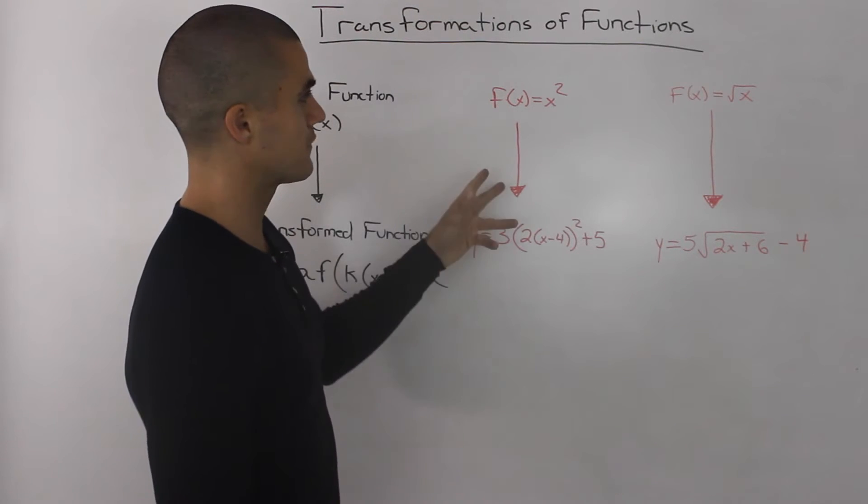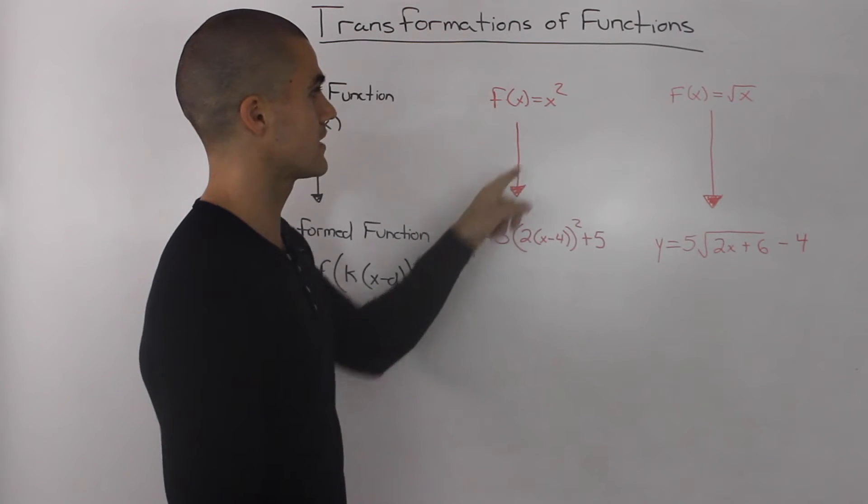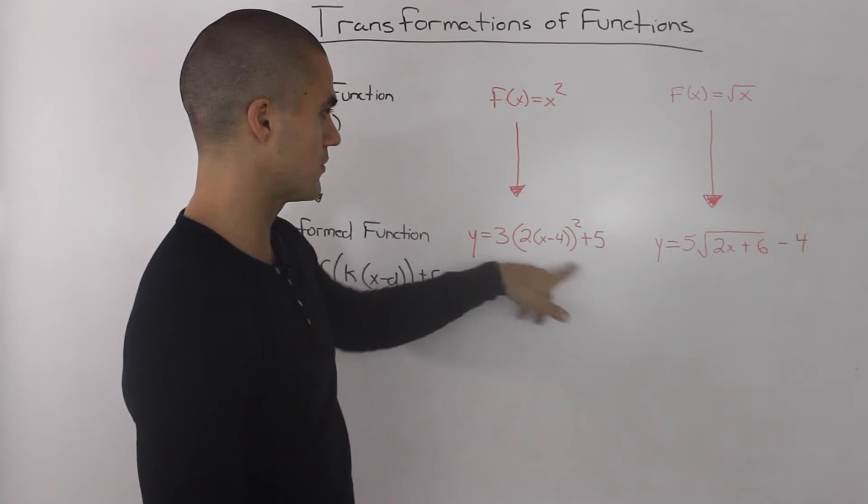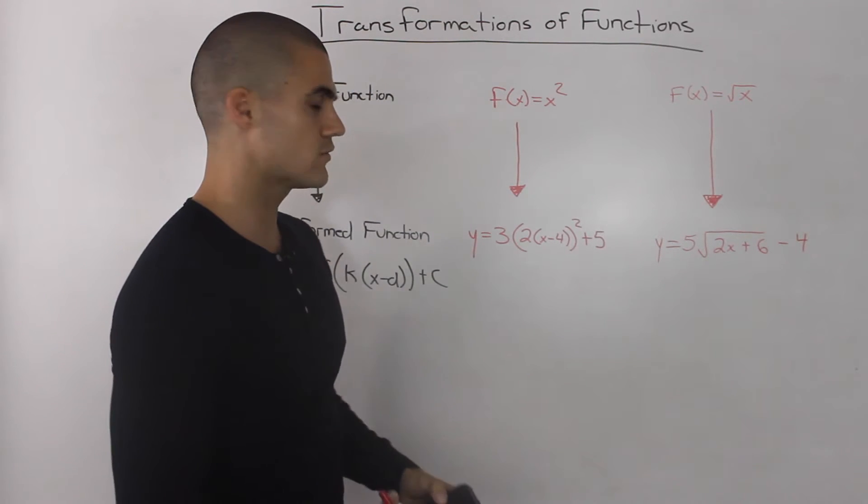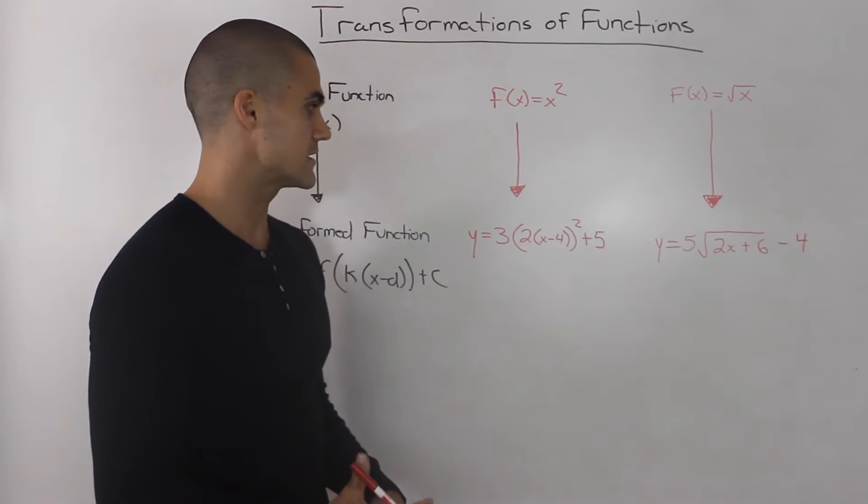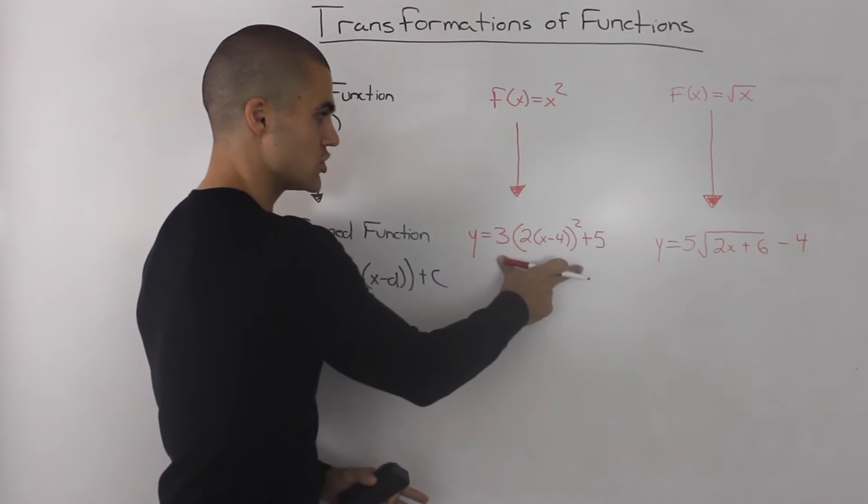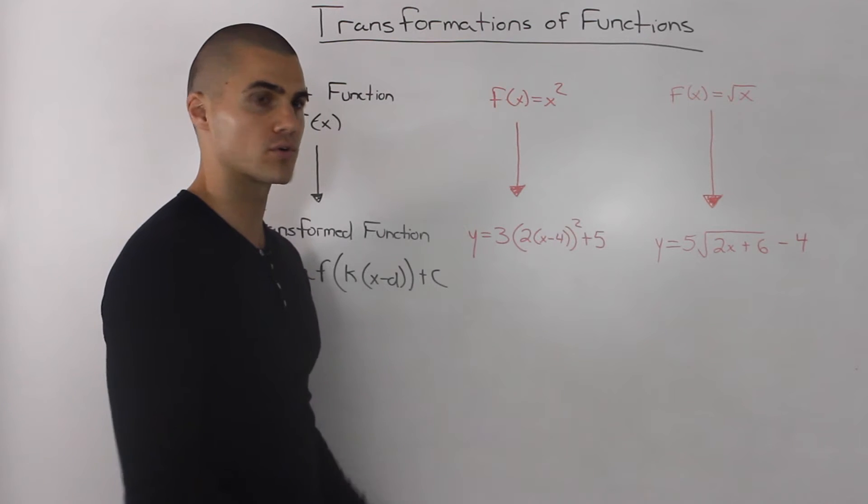So, I took two parent functions that we've already discussed, x² and the square root of x, and I transformed them into these two functions. So for now, what I want to practice is recognizing what letter each number in the transformation corresponds to.